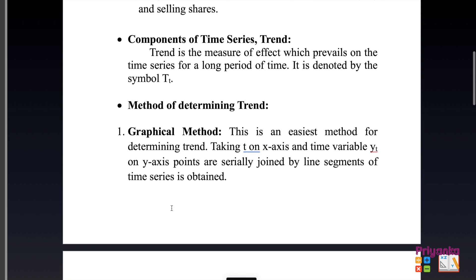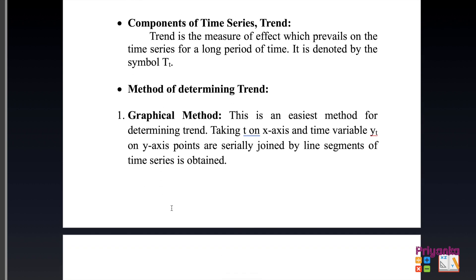In this chapter, we are going to learn three methods of determining trend. The first method is the graphical method, which is the easiest one. In this method, T is taken on the X-axis and the time variable on the Y-axis. Points are serially joined by line segments to obtain the time series graph. This method will be clearer with the solution of the exercise.